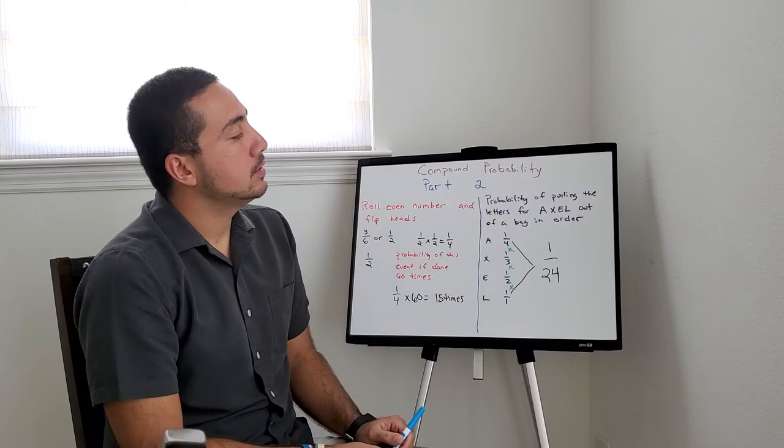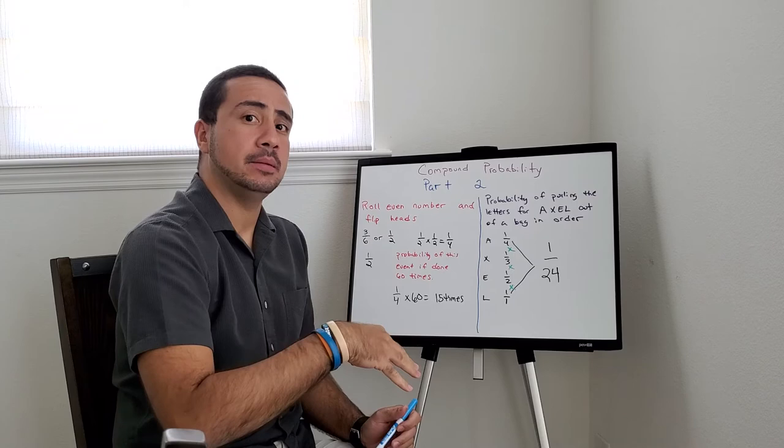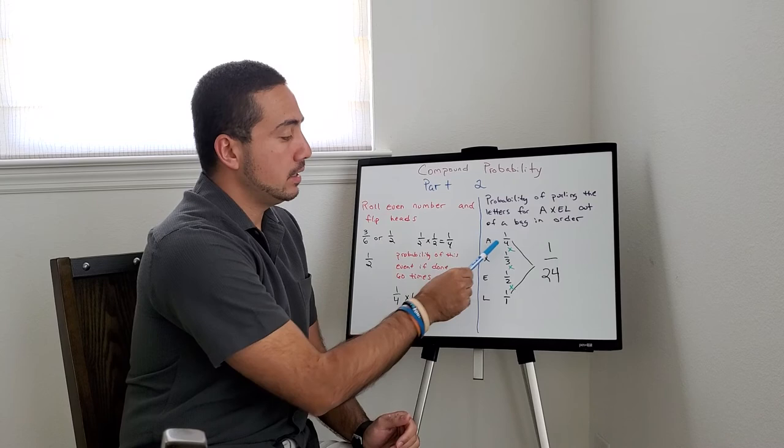Next, probability of pulling the letters for axle out of a bag in order. So what do you do? You have all the letters inside the bag and you're gonna pull them out in order.